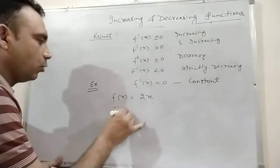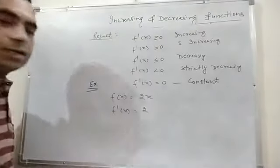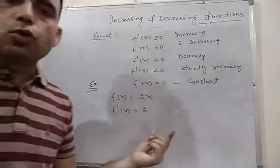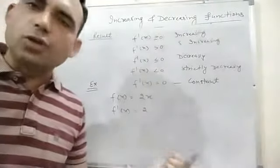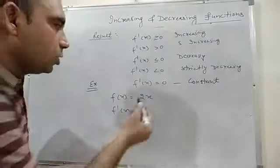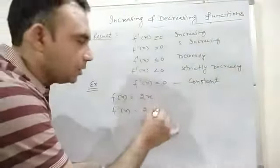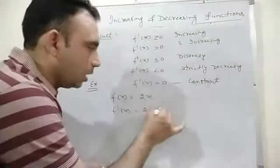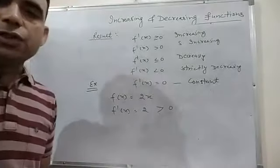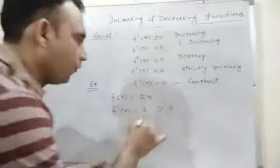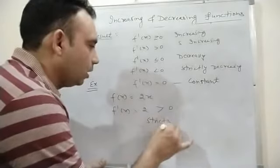Find f'(x). What is f'(x)? It is 2, which is positive. 2 is always greater than 0, so the function is strictly increasing.